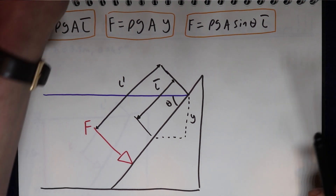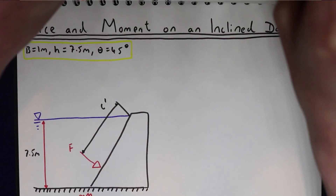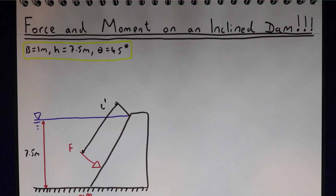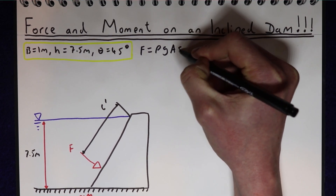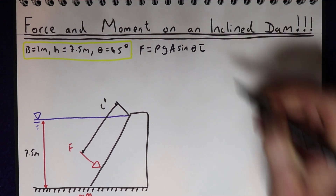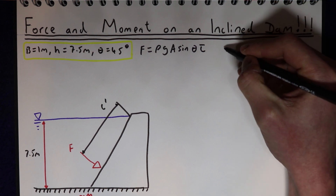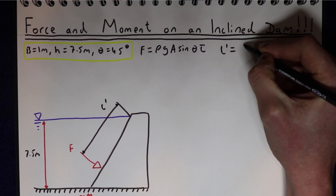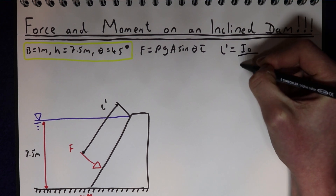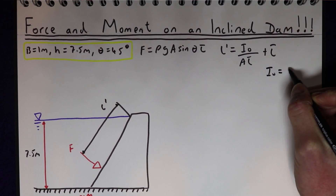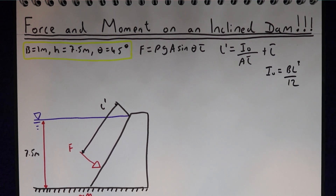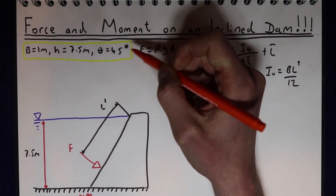Now we know those principles we can go back to the example. The total force is F = ρg·A·sinθ·L̄. The point of action L' is the second moment of area divided by (area times L̄), plus L̄. Our second moment of area is B·L³/12. Those are the three equations we use to solve this problem.